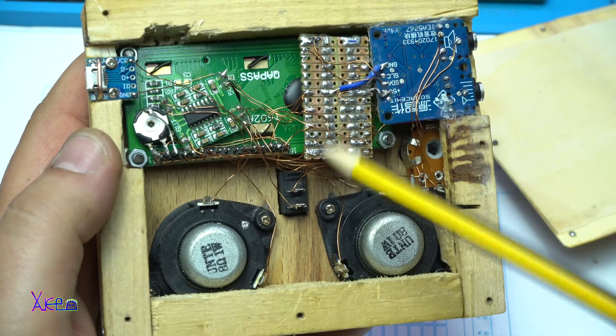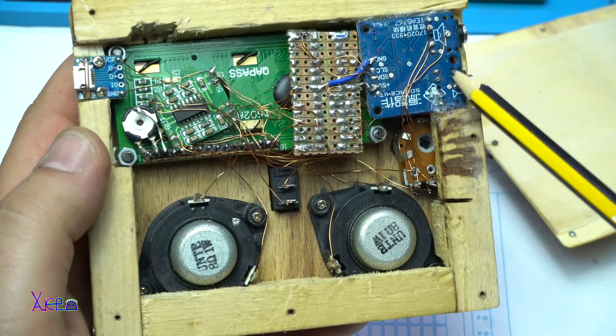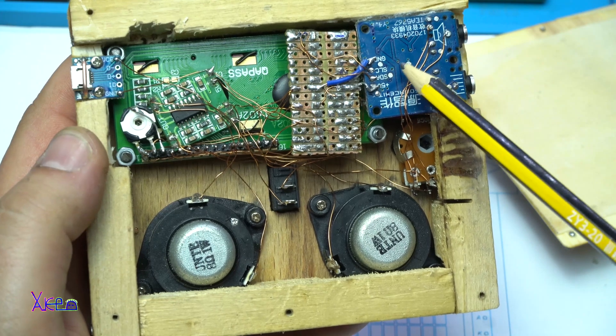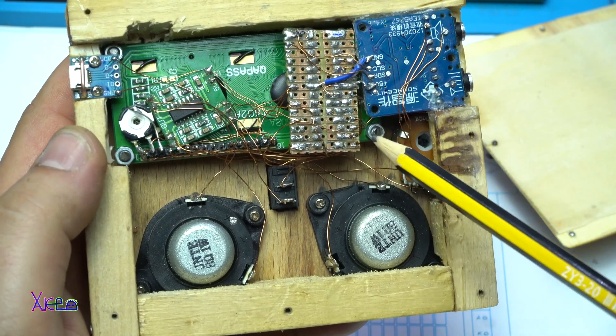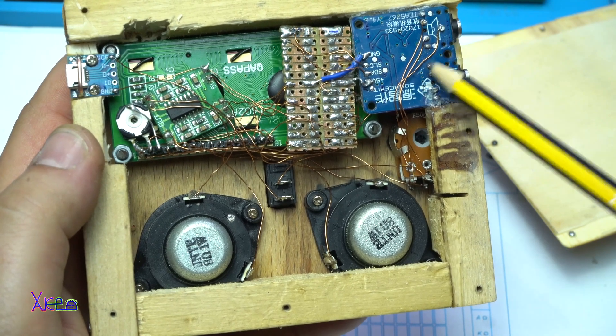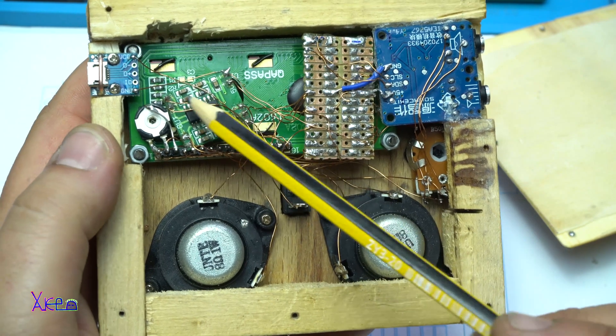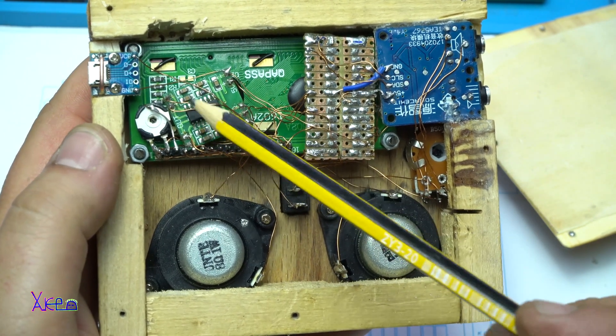It looks complicated but it's not. This blue thing is the radio module that needs to be powered by positive and negative 5 volts. It has audio output and it goes to the mini amplifier board, stereo amplifier board.